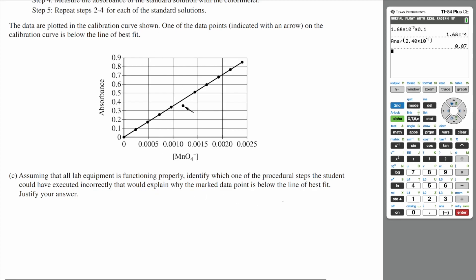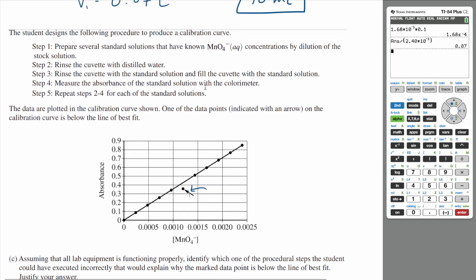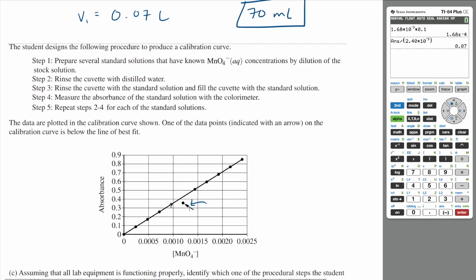If you look at this point here, this point is below where it should be. The absorbance of this point should be higher than it is. So let's look through our steps and see which step, if we did wrong, would produce an absorbance that is lower than it should be. I'll save you some time.